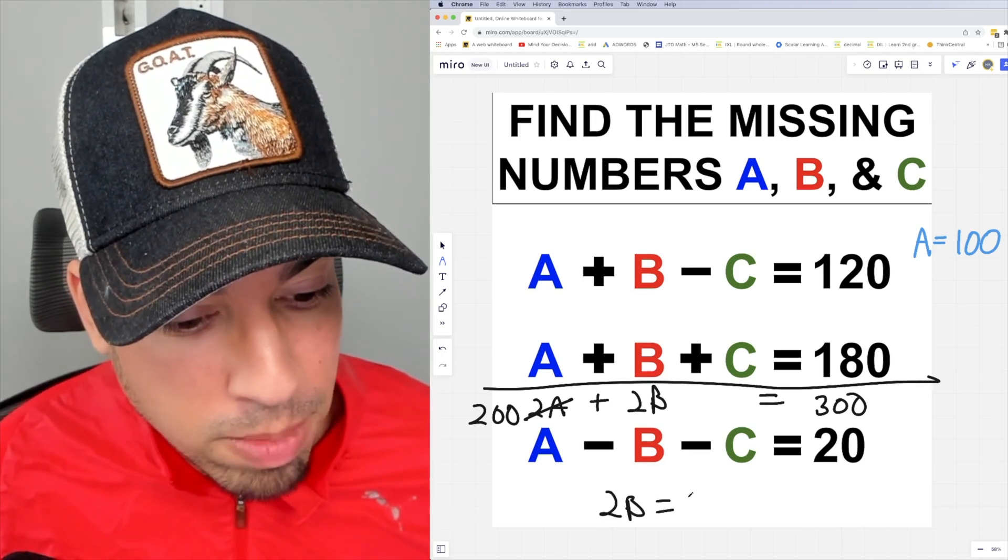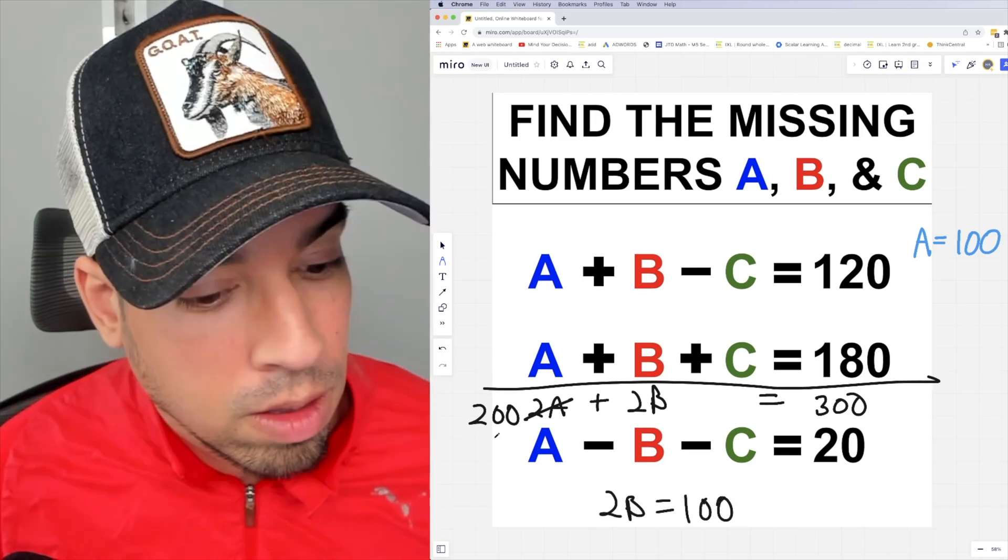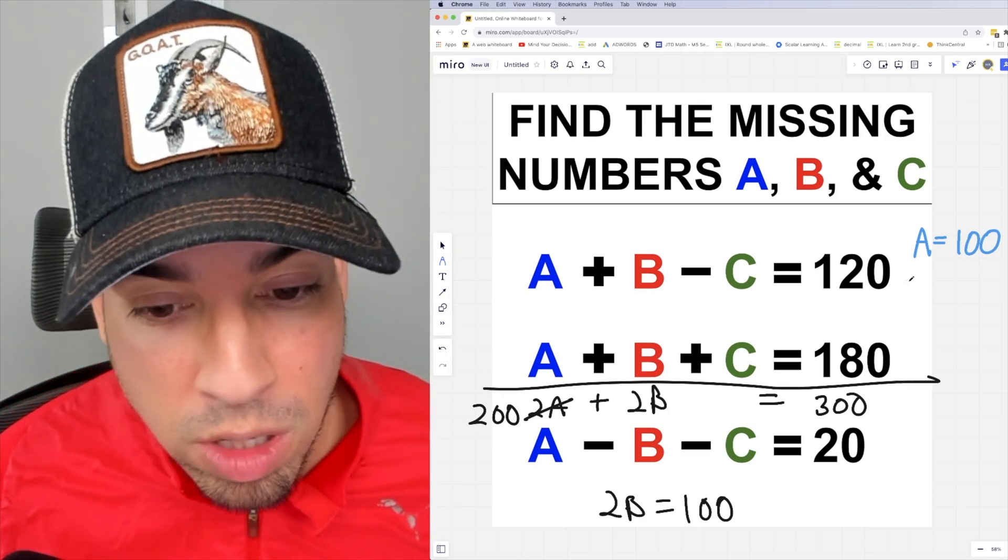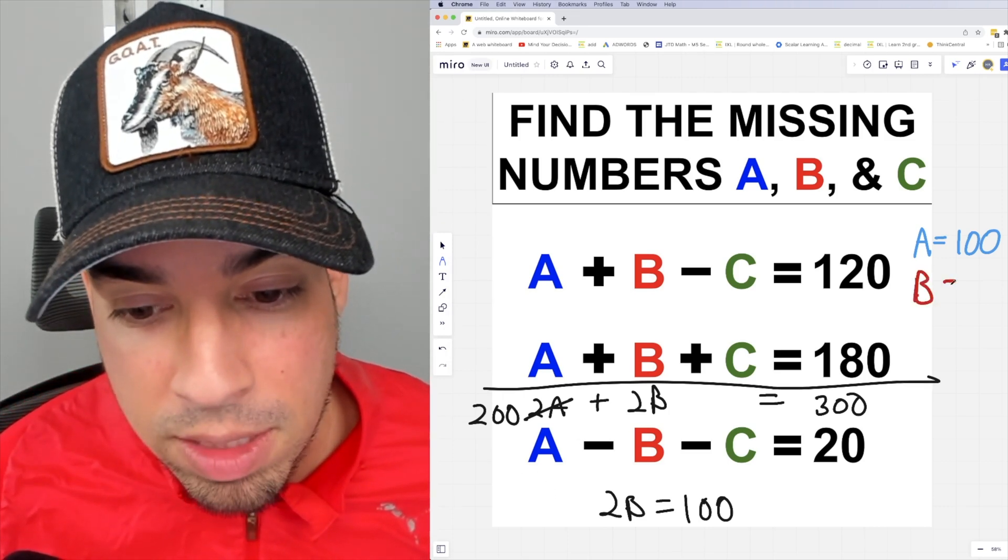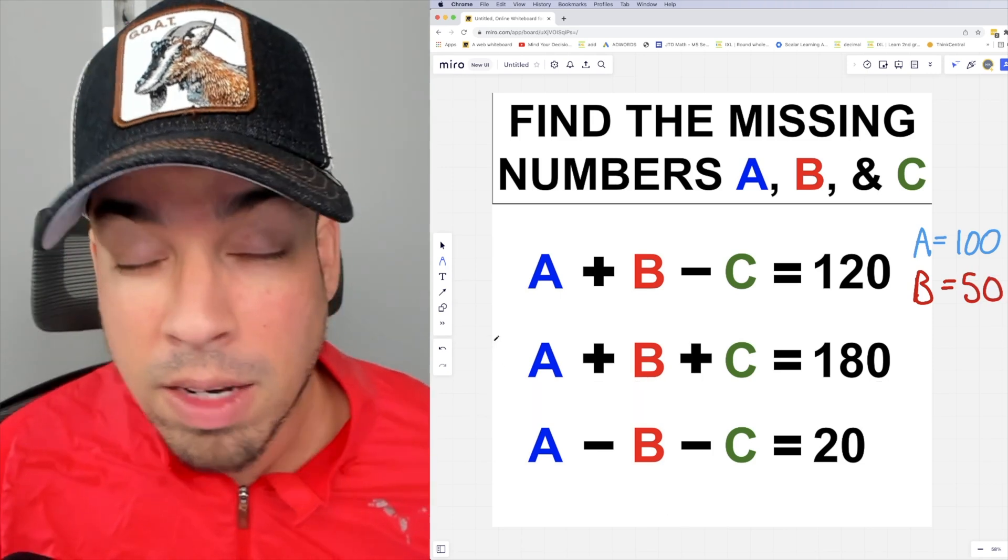Therefore, if 2B equals 100, then B is simply 50. Now that I know the values for A and B, I can use any equation to figure out what C is.